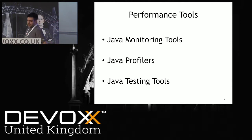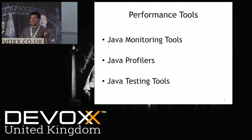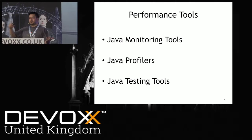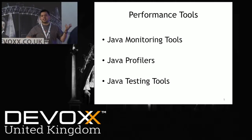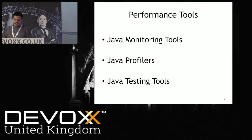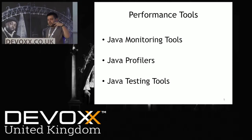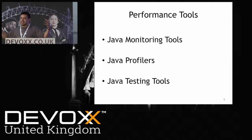Performance tools can broadly be categorized in three different ways: Java monitoring tools, Java profilers, or Java testing tools. A Java monitoring tool is the kind of tool which typically runs in its own process, monitors your entire environment — from your CPU to your memory to threading. We're effectively talking about APMs here. The answers a Java monitoring tool or APM will give you: is my environment broken and where is it broken?